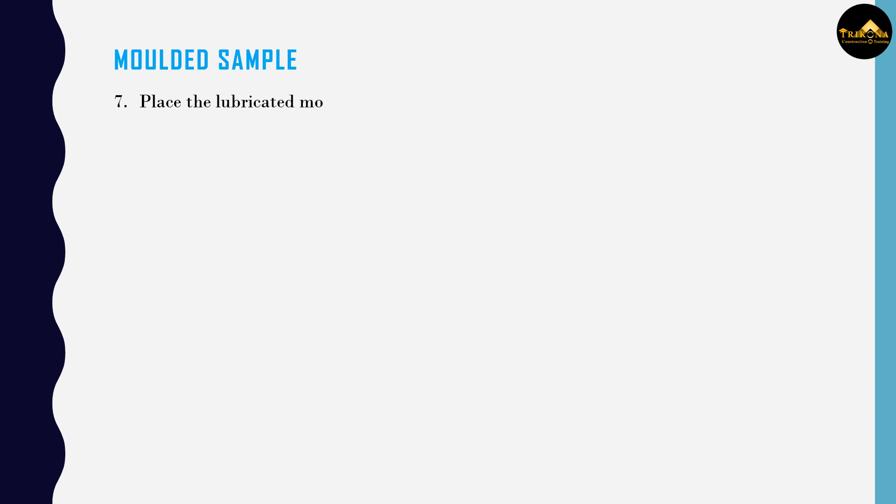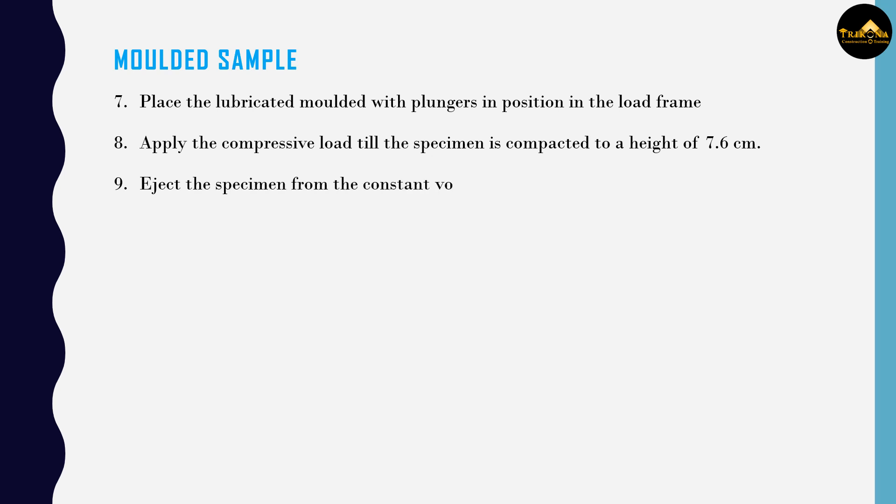Place the lubricated mold with plungers in position in the load frame. Apply the compressive load till the specimen is compacted to a height of 7.6 cm. Eject the specimen from the constant volume mold. Record the correct height, weight, and diameter of the specimen.